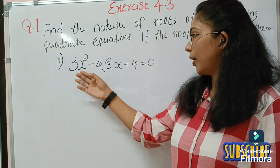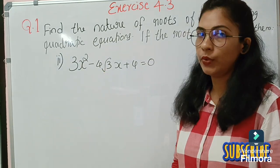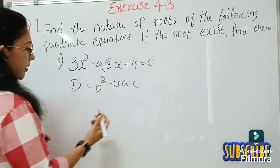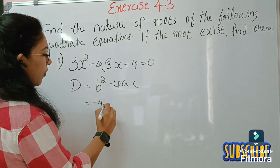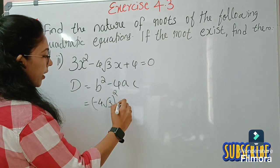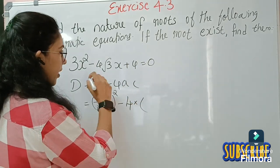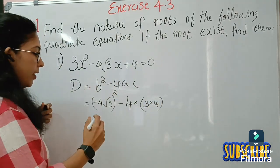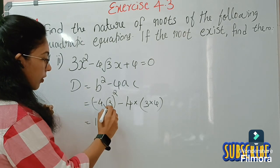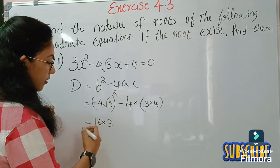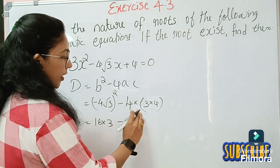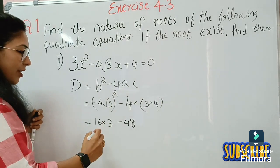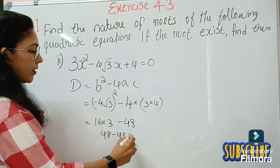The second equation is 3x² minus 4√3x plus 4 equals 0. We find discriminant D = B² minus 4ac. Here B = −4√3, A = 3, C = 4. So B² = (−4)² times (√3)² = 16 times 3 = 48. And 4ac = 4 times 3 times 4 = 48. So D = 48 minus 48 = 0.